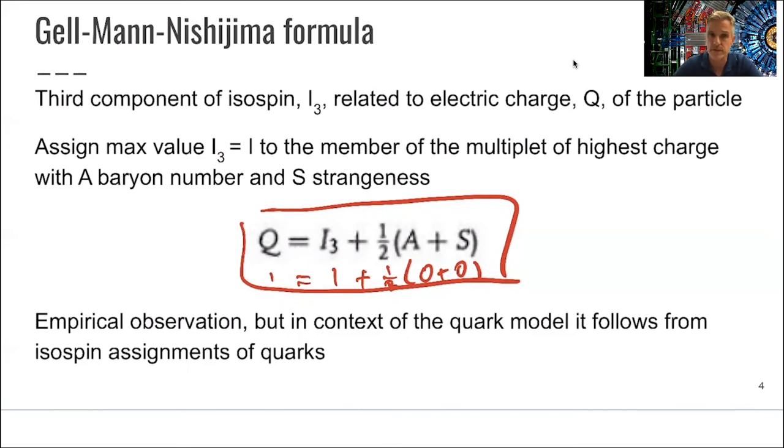So this was empirically observed. But once you then later discover and develop a quark model, this is then in the 1970s, you can deduce this equation directly from the assignment of isospin to quarks, which is rather fascinating. Again, we don't understand the physics fully, but just from the symmetry you can, empirically, deduce information about physical systems.